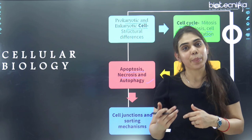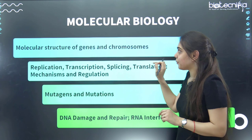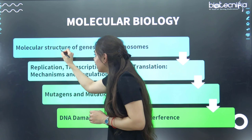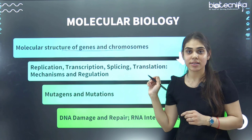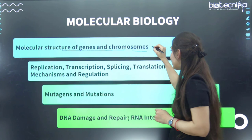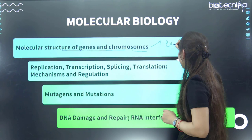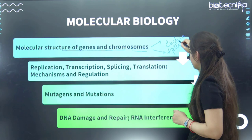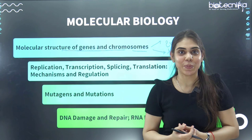Now comes molecular biology, again the most important section. What comes here is molecular structures of genes and chromosomes. You mainly need to focus on euchromatin as well as heterochromatin. Sometimes they ask about the sequence of the telomerase enzyme, and sometimes they focus on the banding pattern of euchromatin and heterochromatin.